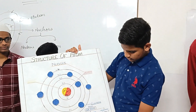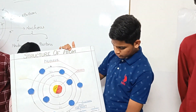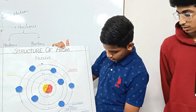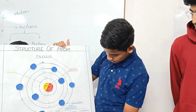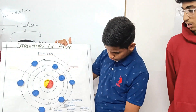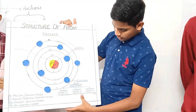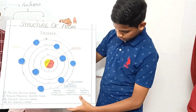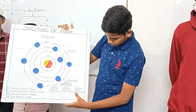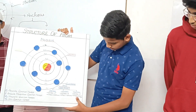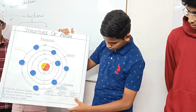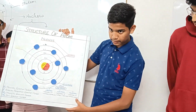The proton mass is 1.008 atomic mass units. The neutron mass is 1.008 atomic mass units. The electron mass is 0.005 atomic mass units.